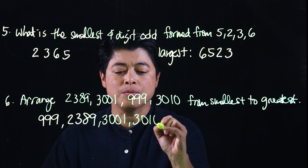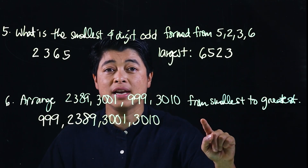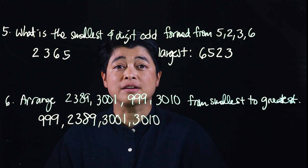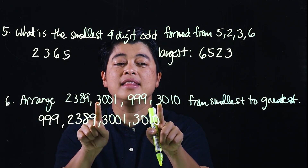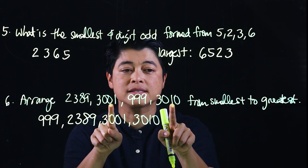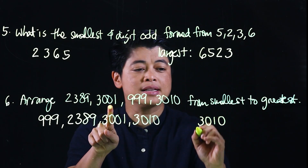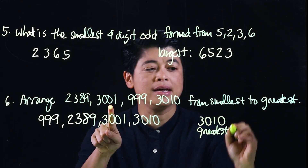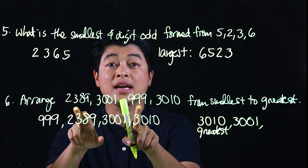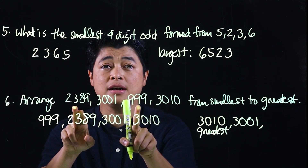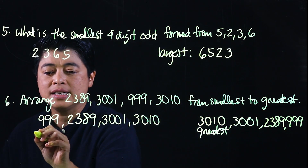That means 3001 comes before 3010. Similarly, to write from greatest to smallest, find the greatest first by looking at the thousands place — the threes are biggest. Comparing the next digits they're the same, then comparing the next, since one is bigger than zero, 3010 is the greatest, followed by 3001. Then we're left with 2389 and 999 — since 2389 is greater than 999, the order is 3010, 3001, 2389, 999.